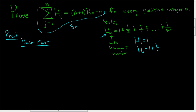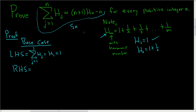We replace all of the n's with 1's and see if our statement is true. The left-hand side when n equals 1 is the sum as j runs from 1 to 1 of h sub j, which gives h sub 1, and h sub 1 equals 1. The right-hand side, replacing all n's with 1's, is 1 plus 1 times h sub 1 minus 1, which is 2 times 1 minus 1, which equals 1. The left-hand side equals the right-hand side, so the statement is true when n equals 1.